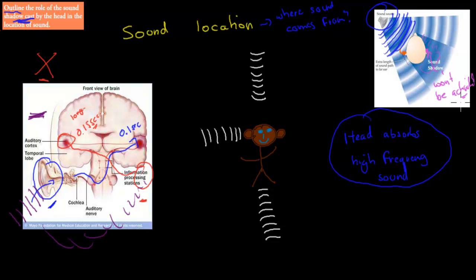That's basically the idea of the sound shadow: the skull or head absorbs the sound, which means it doesn't get to the other side. So if your ear is facing a sound source, only that ear will be activated. The other ear won't be — or won't be to the same extent — because much of that sound has been absorbed by the head.